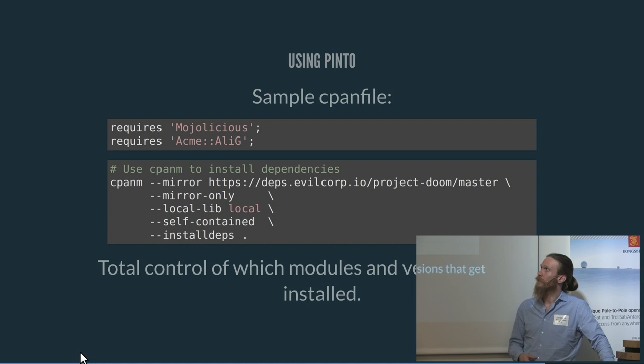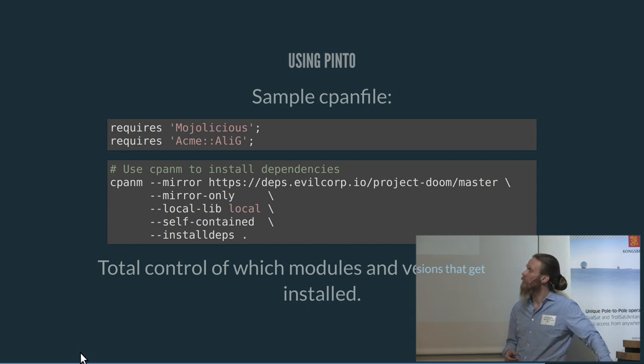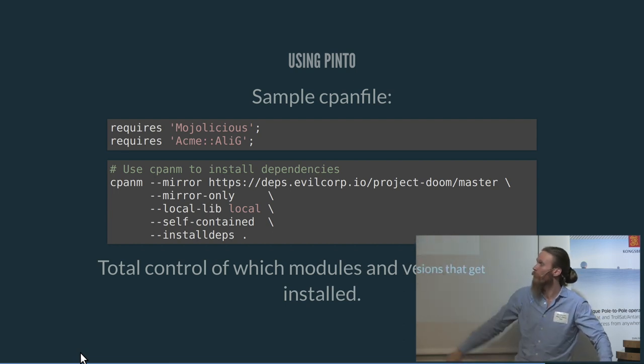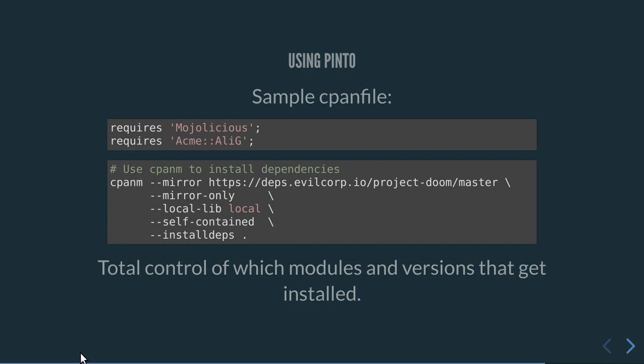Using Pinto is basically very easy. You have your CPAN file with your dependencies. Since we're in Evil Corporation, we have an .io domain. We have our project and the stack we're pulling from, and cpanm likes those command line options. We say use the mirror only to not go to CPAN, tell it to install everything to a local directory, keep everything self-contained, and install dependencies based on this file. With Pinto, you don't have the cpanfile.snapshot to maintain - you just have the authoritative stack that basically says this is the version you want.